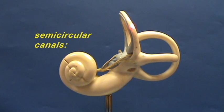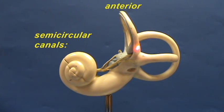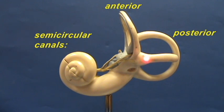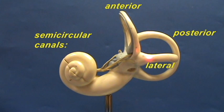This one over here, which is closest to the cochlea, is the anterior semicircular canal. This one over here is the posterior semicircular canal. And this one that's at a horizontal compared to these two is the lateral semicircular canal.